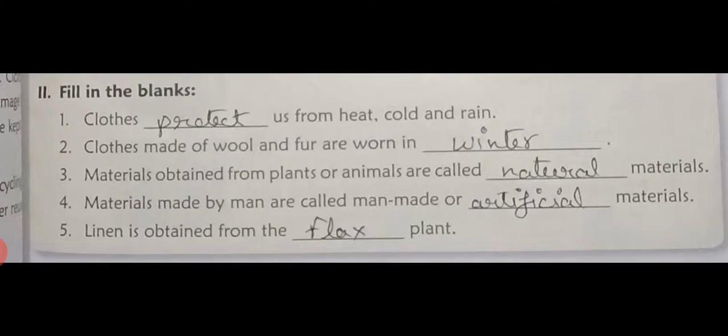Number one: Clothes — C L O T H E S — protect — P R O T E C T — draw the underline. Protect us from heat — H E A T — comma, cold — C O L D — and rain — R A I N — full stop.